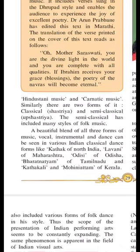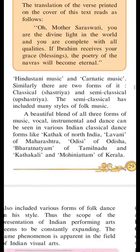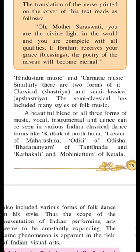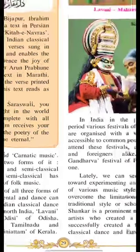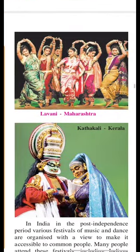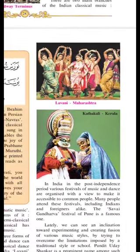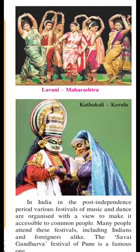A beautiful blend of all three forms of music — vocal, instrumental, and dance — can be seen in various Indian classical dance forms like Kathak of North India, Lavani of Maharashtra, Odissi of Odisha, Bharatnatyam of Tamil Nadu, and Kathakali and Mohiniattam of Kerala. Here a photograph of Maharashtra's Lavani and below it a photograph of Kerala's Kathakali are shown.